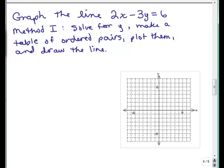So far, we've covered quite a few things about graphing lines. Basically, we've done this by plotting points. For instance, if you're asked to graph the line 2x minus 3y equals 6, the method we've used is to solve for y, make a table of ordered pairs, plot them, and draw the line.